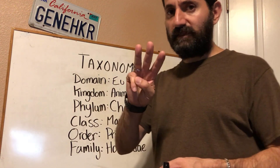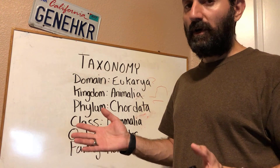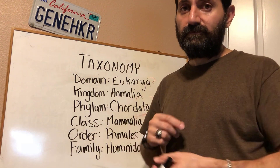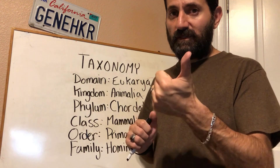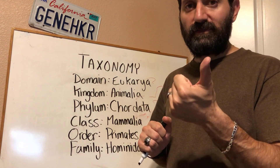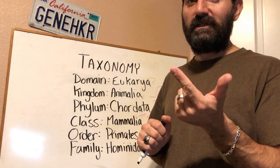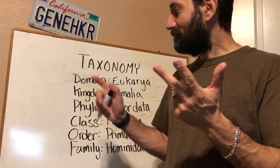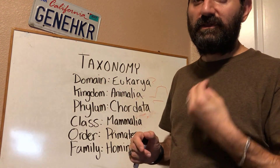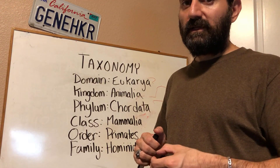There are only three domains of life, and all living things on earth fall into one of the three domains of life. There are the bacteria, which are made up of prokaryotic cells. There are the archaea, which are also made of prokaryotic cells. And the domain eukarya — eukarya is the third domain of life, made up of eukaryotic cells.